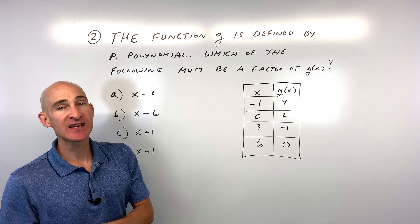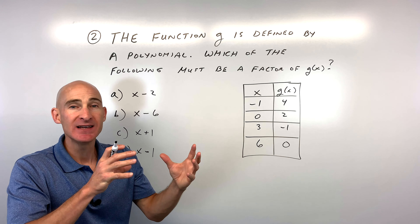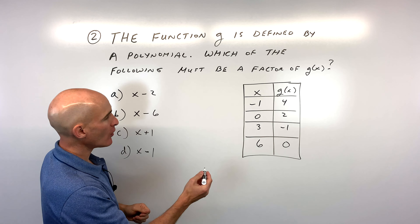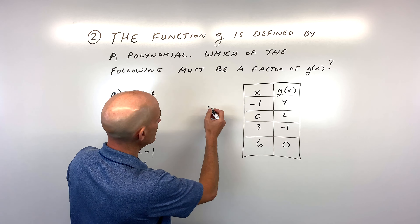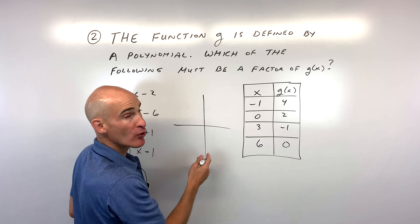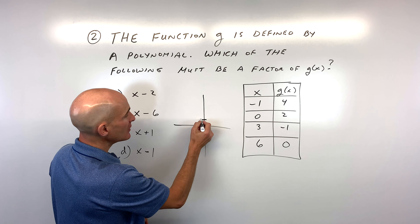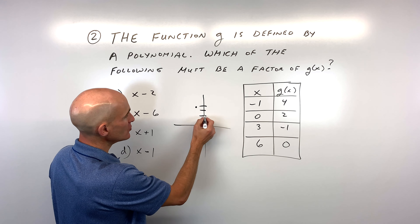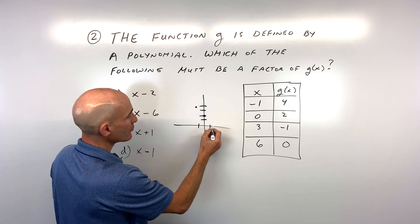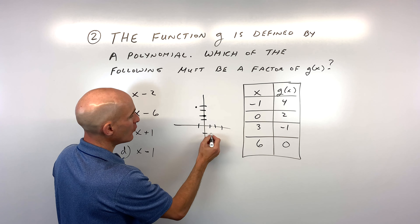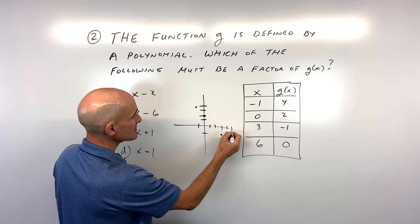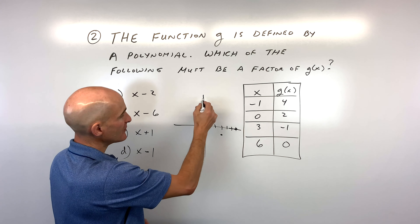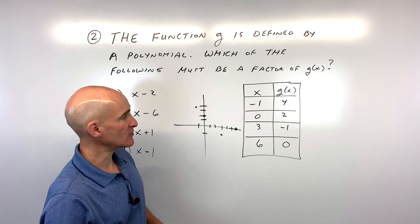What they're really testing us on here is the connection between zeros and factors. Let's plot these points to demonstrate: negative one, four is here; zero, two is here; three, negative one is here; and six, zero is here. So we have a polynomial going through these points — a nice smooth continuous curve.